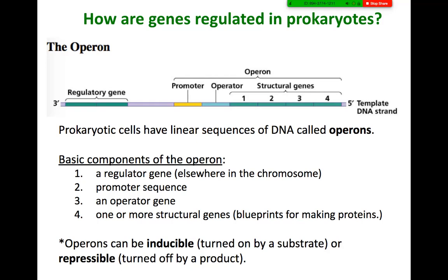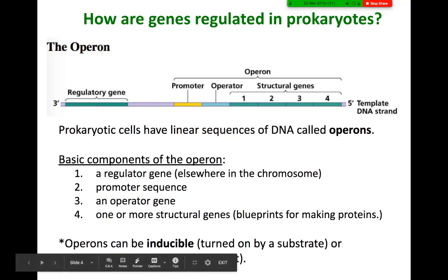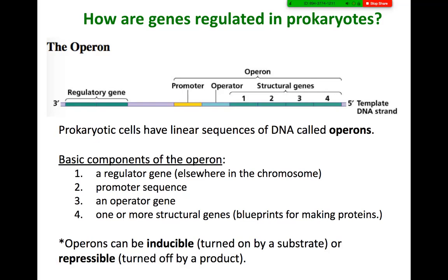There are basic components to the operon: a regulatory gene upstream from the structural genes, a promoter sequence, an operator sequence, and then the structural genes. These particular sections of DNA known as an operon can either be inducible, where the presence of a substrate will turn it on, or repressible, where the operation of genes would be turned off by the presence of a product.